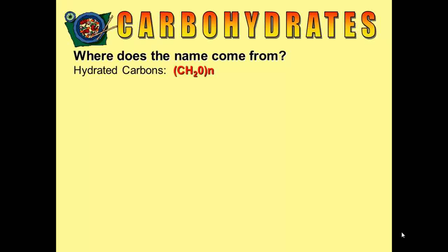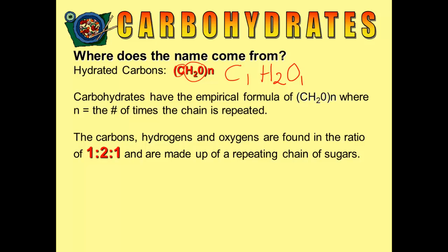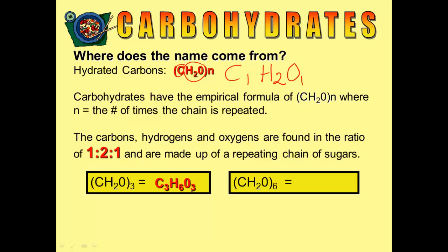So where does the name 'carbohydrates' come from? Well, basically when you look at carbohydrates, it is a carbon and water joined together. The carbon is always in a ratio of 1 carbon to 2 hydrogens to 1 oxygen. So the carbons, hydrogens, and oxygens are in a final ratio of 1 to 2 to 1. For example, CH2O times 3 gives you C3H6O3, a 1 to 2 to 1 ratio. CH2O times 6 gives you C6H12O6, and that's glucose.